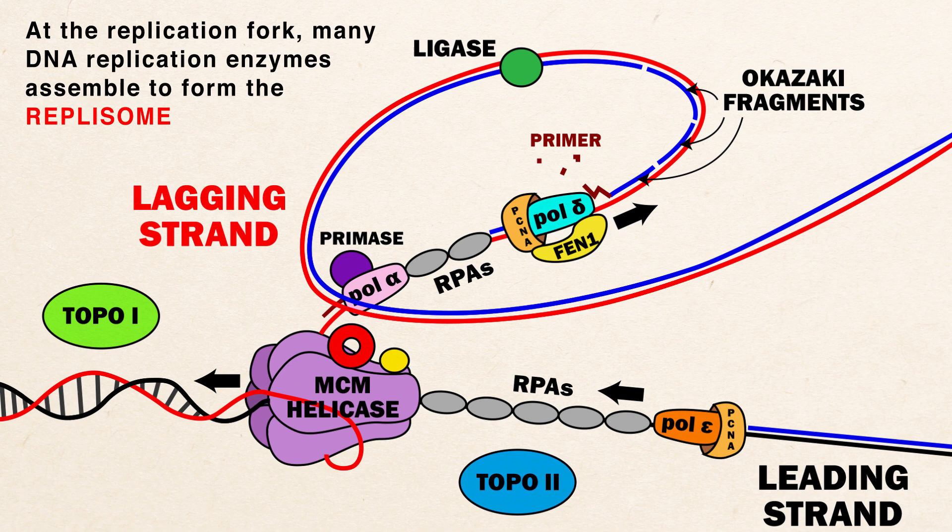Elongation. At the replication fork, many DNA replication enzymes assemble to form what is called the replisome. These enzymes include, but are not limited to, DNA helicase, DNA polymerases, DNA clamps, RPAs, topoisomerase, DNA ligase, and primase.